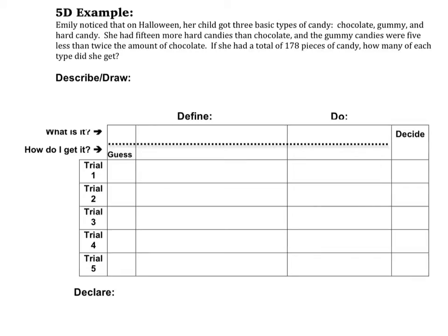The reason it's called 5D is because there are five parts to it, and whoever decided to name this came up with five D words to help us remember. The first part is going to be to describe — I'm going to describe what the important parts of the information are — or draw. If it happens to be about a triangle or something, maybe I will draw it.